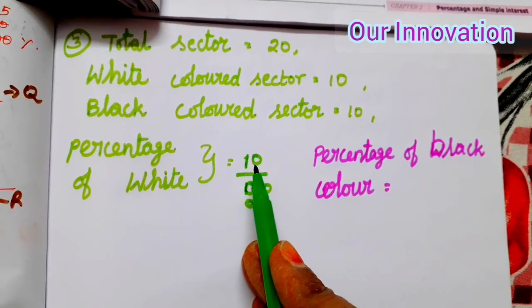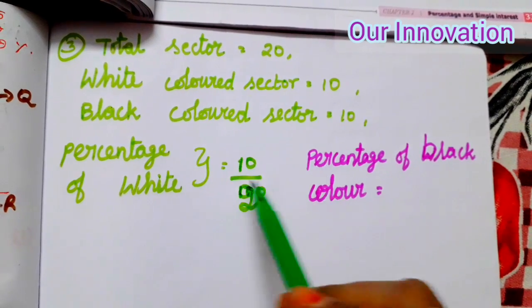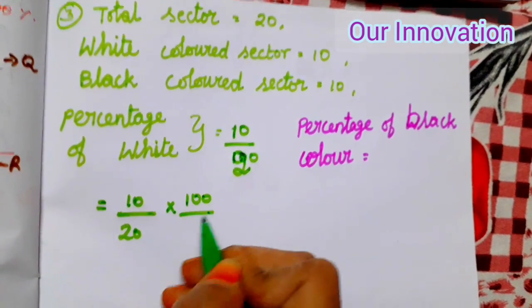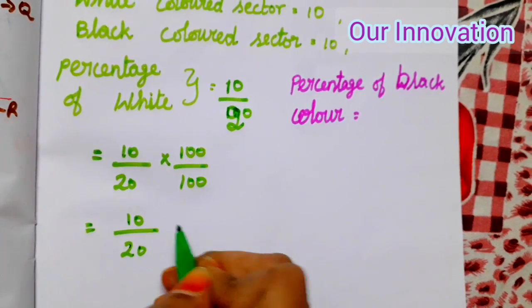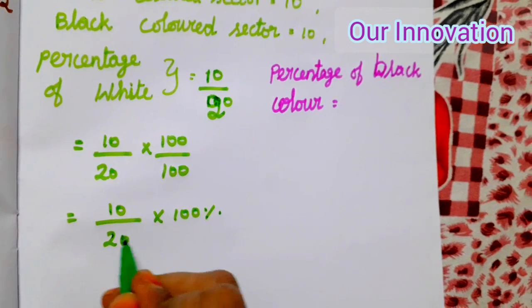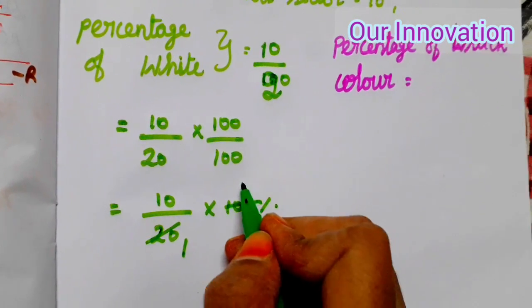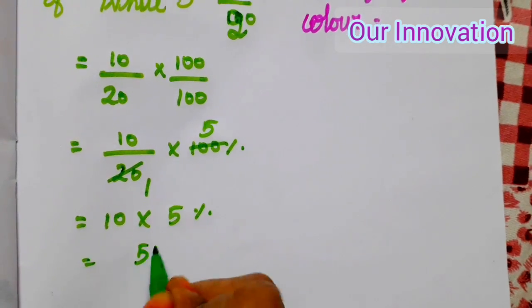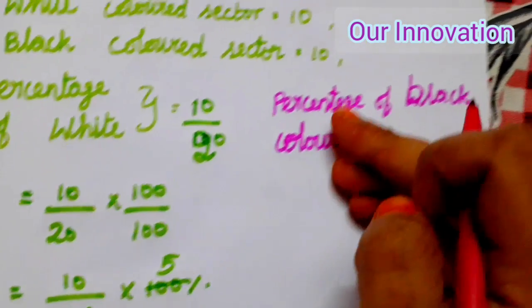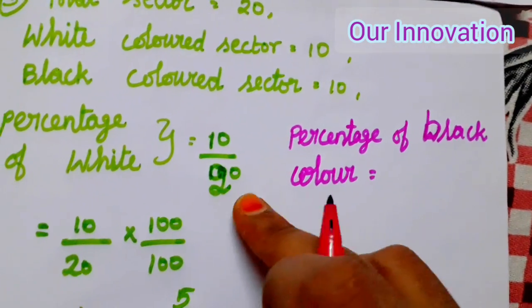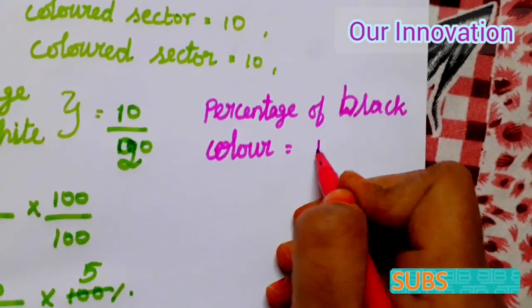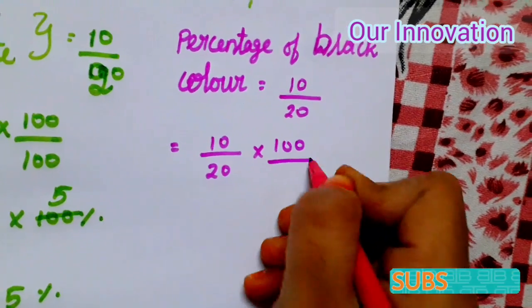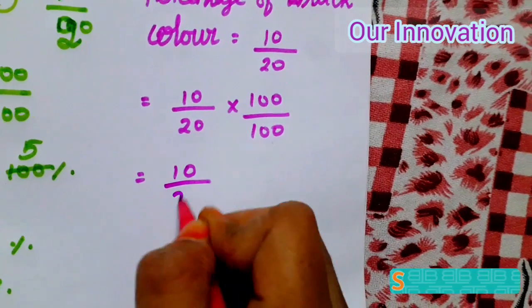Percentage of white color is equal to 10 by 20 into 100. So 10 by 20 into 100 — percentage of white equals 50%.